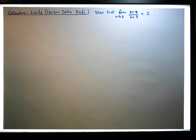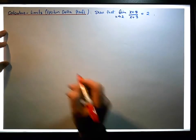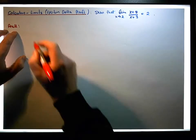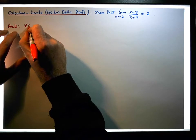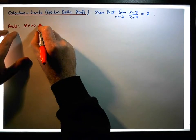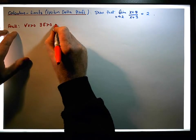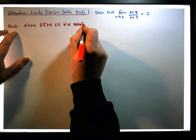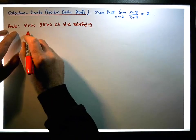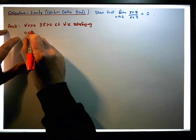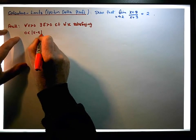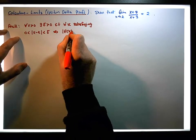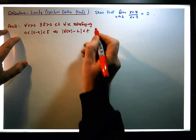So let's just recall the epsilon-delta definition of a limit. It says that for each and every epsilon greater than zero, there exists a delta greater than zero, such that for each and every x satisfying the condition that zero is less than the absolute value of x minus a, which is less than delta, this should imply that the absolute value of f(x) minus the limit is less than epsilon.